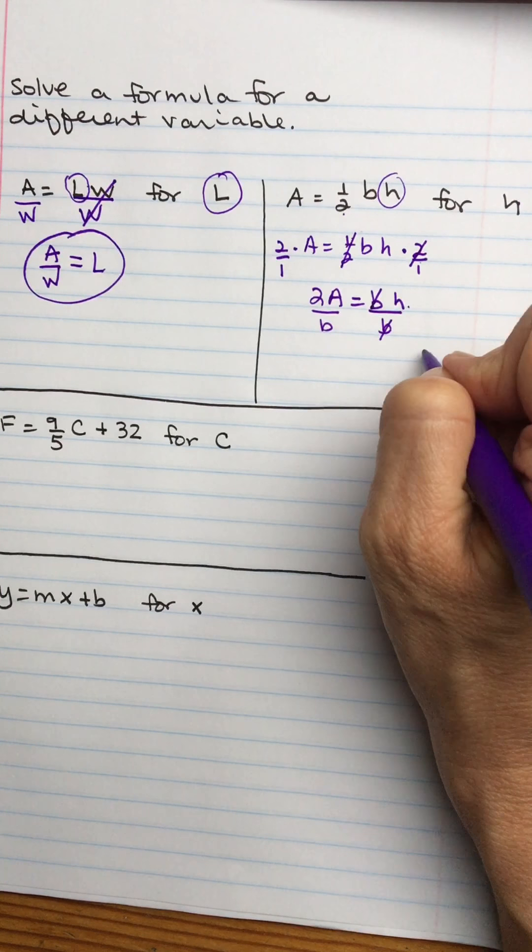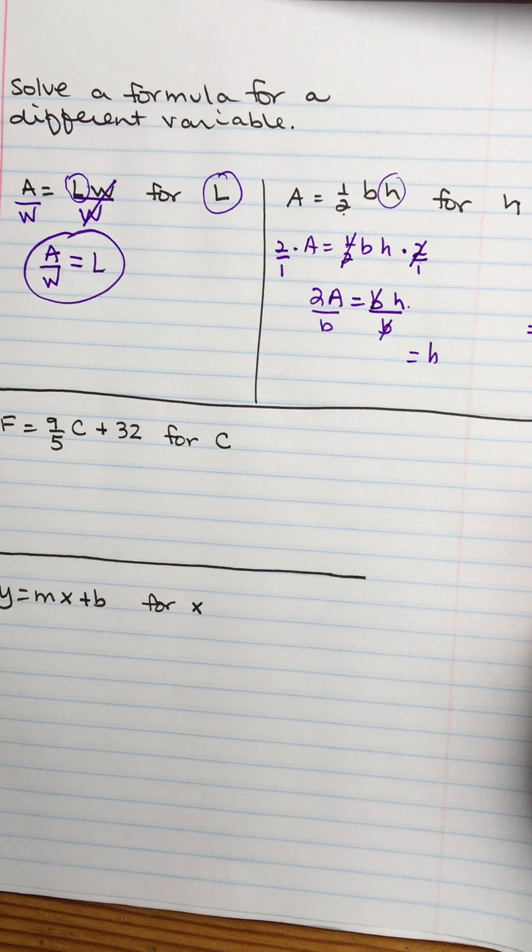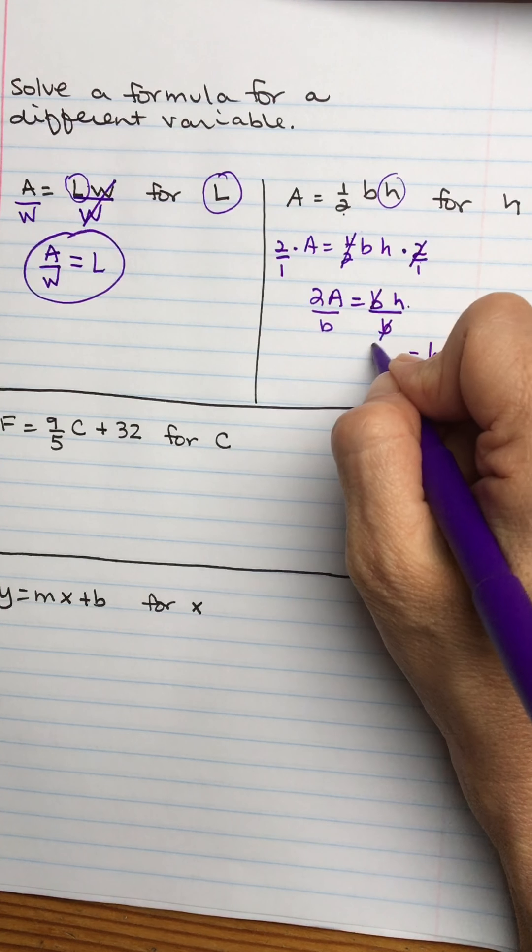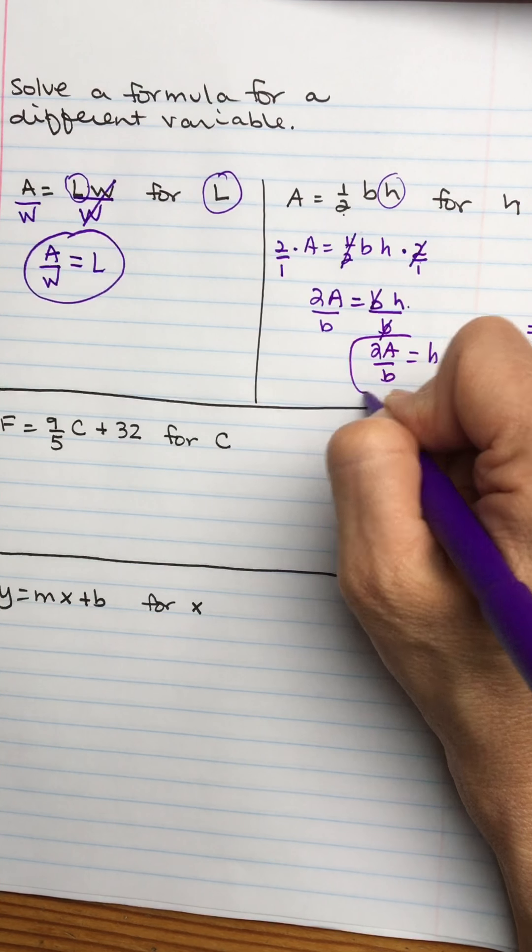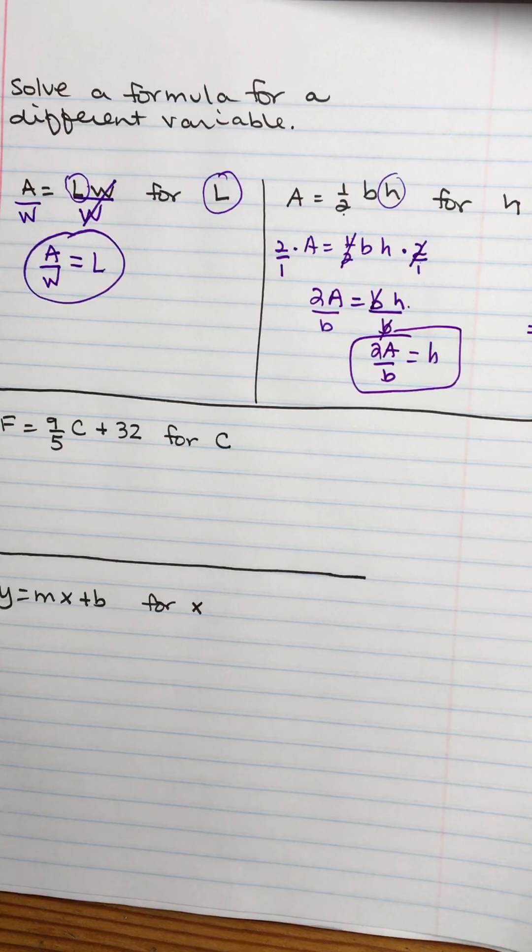Here they go canceling on the right. H is by itself, just like I wanted. So H equals 2A over B.